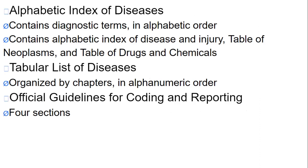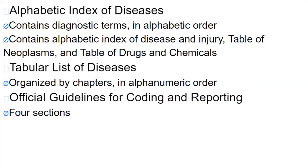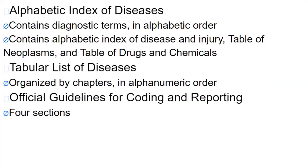The alphabetic index of diseases contains diagnostic terms in alphabetical order, including an alphabetic index of disease and injury, a table of neoplasm, and a table of drugs and chemicals. The tabular list of diseases is organized by chapters in alphanumeric order. The official guidelines for coding and reporting have four sections: Section 1 covers conventions, general coding guidelines, and chapter-specific guidelines; Section 2 is selection of principal diagnosis; Section 3 is reporting additional diagnoses; and Section 4 is diagnostic coding and reporting guidelines for outpatient services.